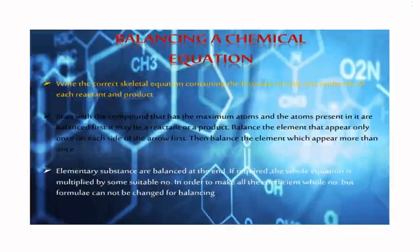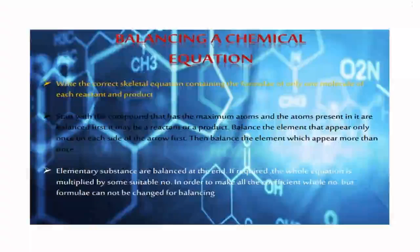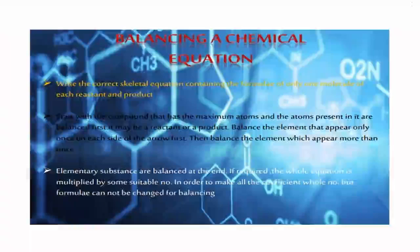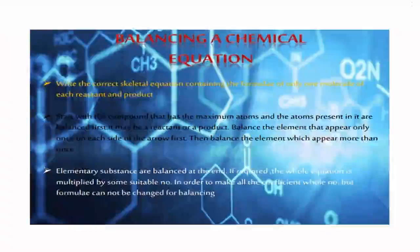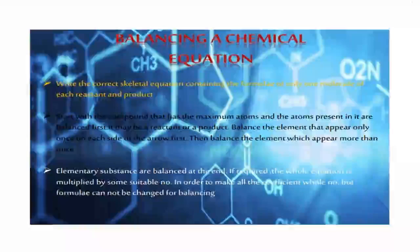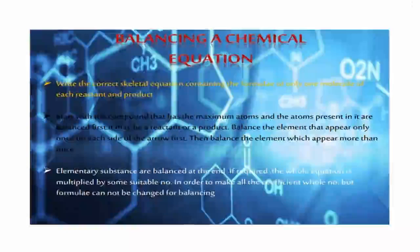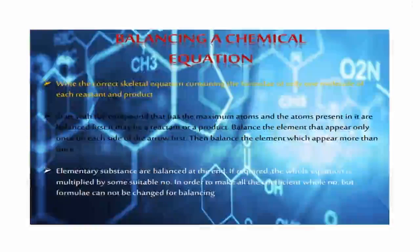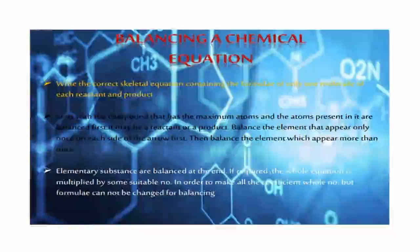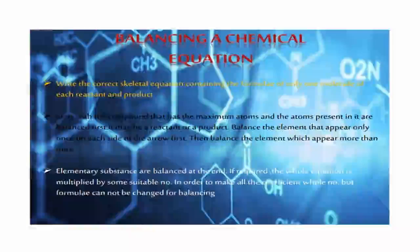Balancing a chemical equation: Write the correct equation containing the formula of only one molecule of each reactant and product. Start with the element that has the maximum atoms and balance those atoms first. It may be a reactant or a product. Balance elements that appear only once on each side of the arrow first, and balance elements that appear more than once. Elementary substances are balanced at the end. The whole equation is multiplied by some suitable number in order to make all the coefficients whole numbers, but formulas cannot be changed for balancing.